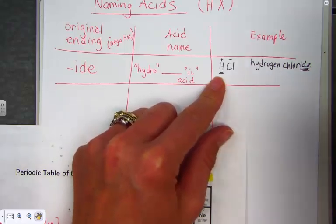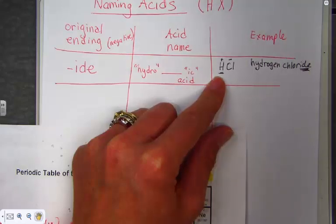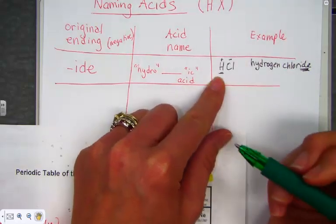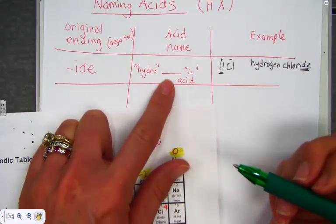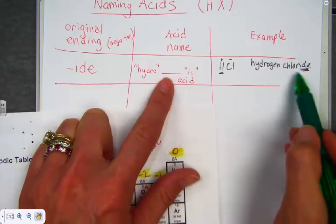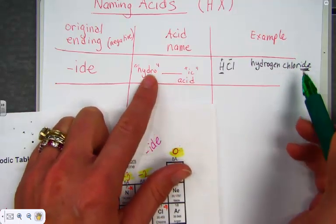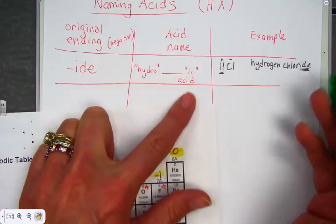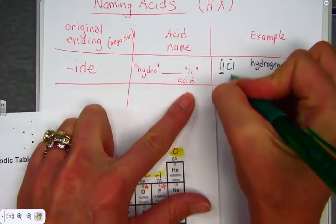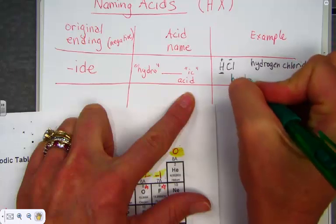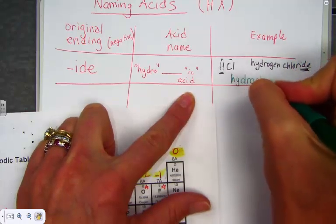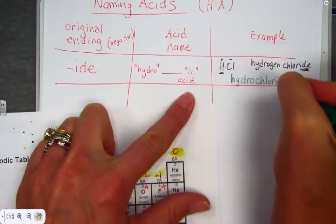But now, say it as an acid with me. In terms of writing it as an acid, we have hydro, root word, -ic. That root word is coming from the negative ion. Hydrochloric acid. Let's write that in. HCl is an example. Hydrochloric acid.